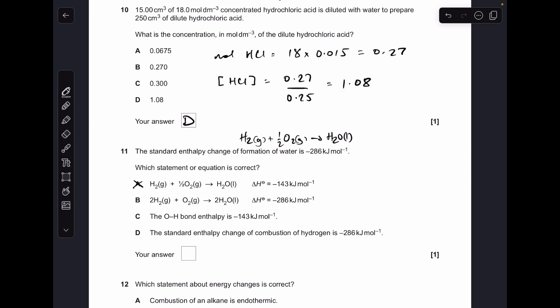Option B, the delta H is correct but the equation's double what it should be, so that's wrong. Option C is totally wrong because bond enthalpies are endothermic processes, not exothermic, so they need a positive sign there. So option D must be the right answer and it is, because this equation also represents a standard enthalpy change of combustion of hydrogen—one mole of hydrogen completely combusted under standard conditions.